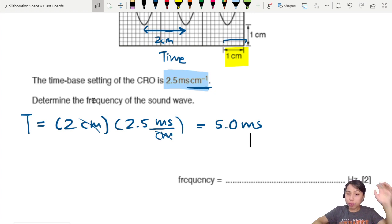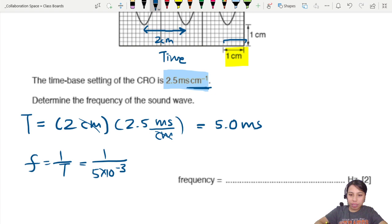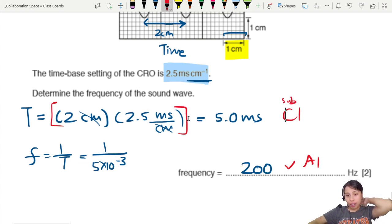So we multiply by 2.5 milliseconds per centimeter. Centimeter and centimeter will cancel out, giving us milliseconds, which is what we want. So this will give us 5 milliseconds. But we're not done. We want the frequency though. So F equals 1 over T, which is 1 over 5 times 10 to the negative 3. And that will give us a value of about 200 Hz. So here's two marks. One for final answer, of course, and one for if you knew how to read the value of T.